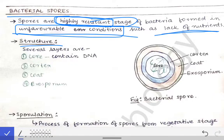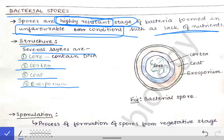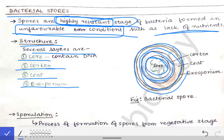Looking at the structure of bacterial spores, there are several layers. The most inner structure is called the core. The second outer structure is called the cortex. Then we have the coat, and then the exosporium on the outside. So from inside out: core, cortex, coat, and exosporium.